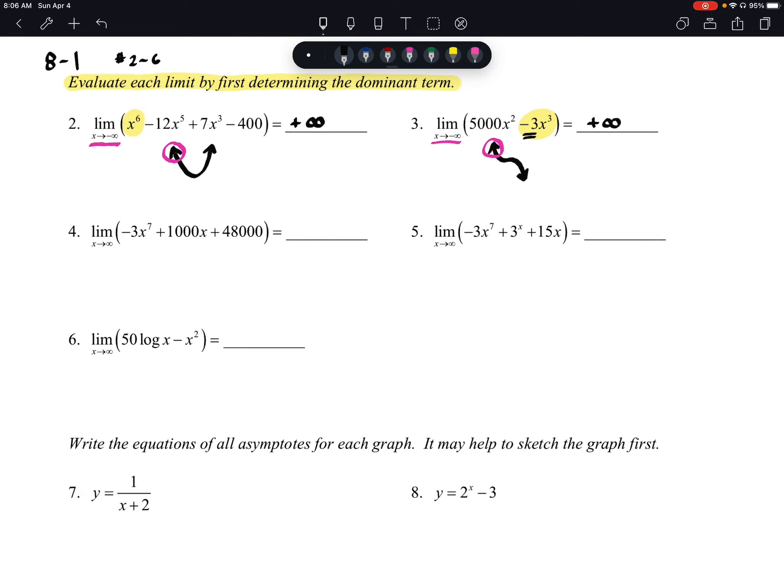Number four: the limit as x approaches positive infinity of negative 3x to the 7th plus 1000x plus 48,000. So here is our dominant term.